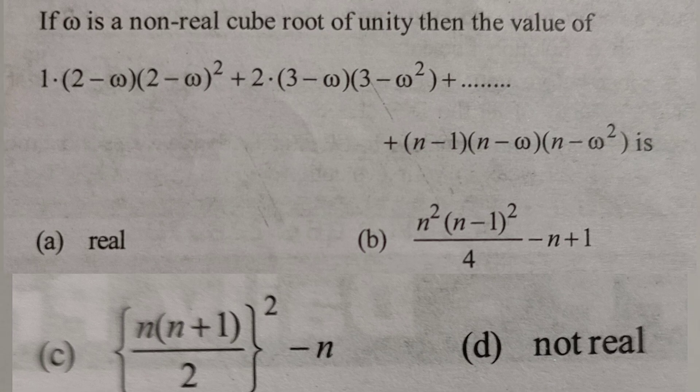The problem is: if omega is a nonreal cube root of unity, then find the value of the expression 1·(2−omega)(2−omega²) + 2·(3−omega)(3−omega²) + ... + (n−1)·(n−omega)(n−omega²). Four options are given and we have to find the correct option.